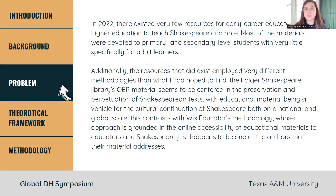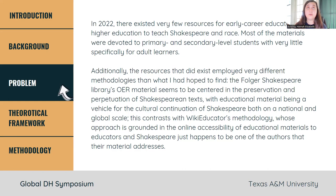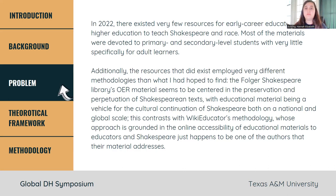In 2022, there really weren't a whole lot of resources available. They were mostly for primary and secondary level students; very few were actually geared towards adult learners. The resources that did exist fell into one of two camps. For example, the Folger Shakespeare Library's focus is primarily on preservation and perpetuation of Shakespearean texts, so educational materials were not so much the focus as was the cultural continuation of Shakespeare on a national and global scale. Another example from the opposite camp would be Wiki Educator's methodology, whose approach is more towards making educational materials of all kinds accessible online, and Shakespeare just happened to be one of the authors their materials addressed.